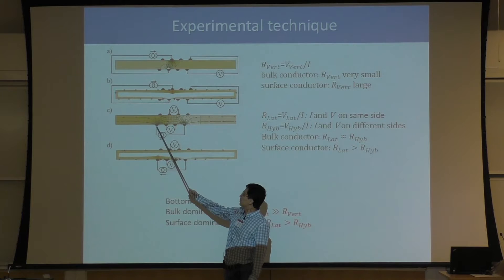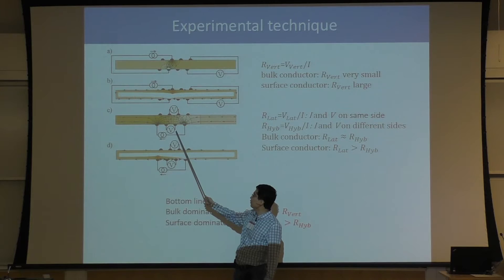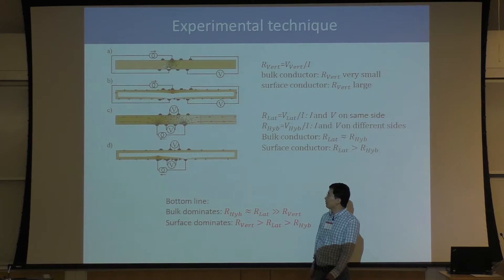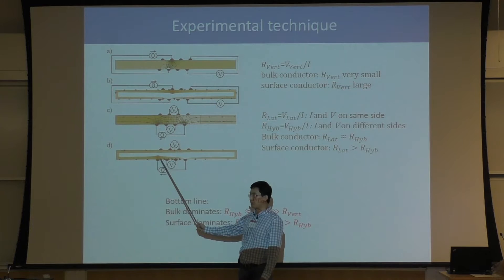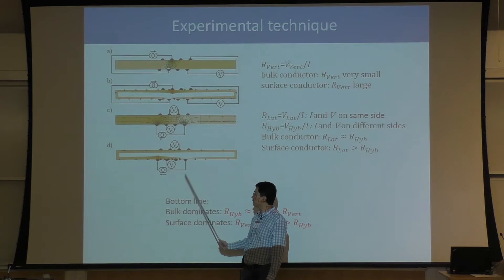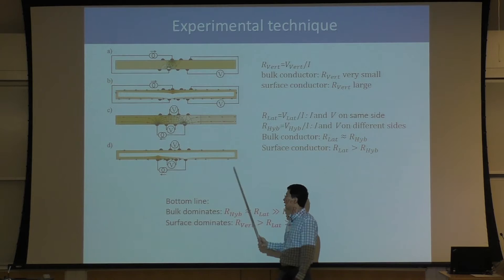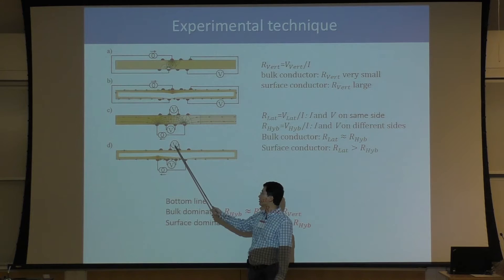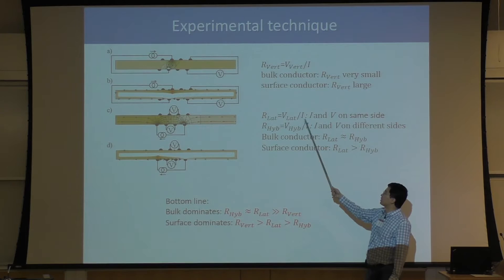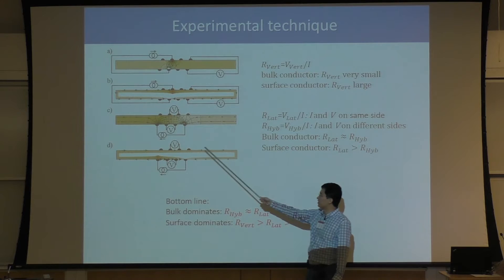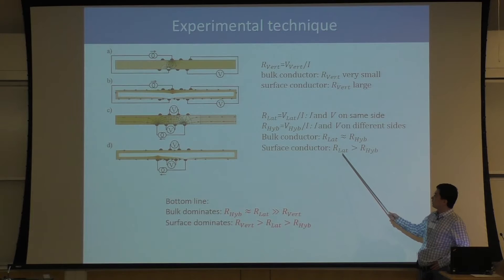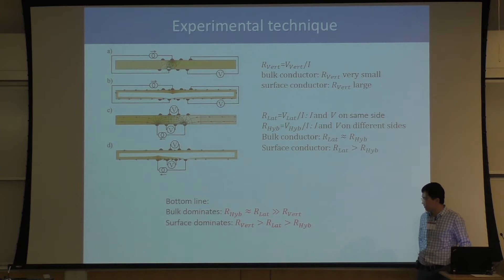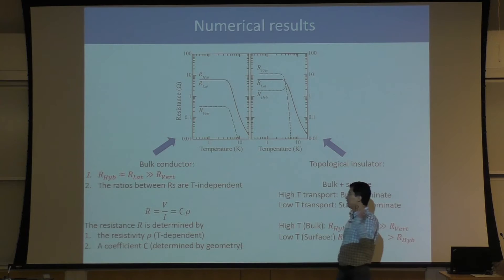He can also send the current in and out from the bottom leads while measuring voltage on the top and bottom simultaneously. For a bulk conductor, the two voltages will be the same. For a surface conductor, most electrons go on the bottom side via the short path, so the current density on the top surface is dramatically smaller, and the voltage on the top surface is dramatically smaller. The ratio between R-lateral and R-hybridized is the same for a bulk conductor but dramatically different for a surface conductor — this easily distinguishes bulk and surface contributions.